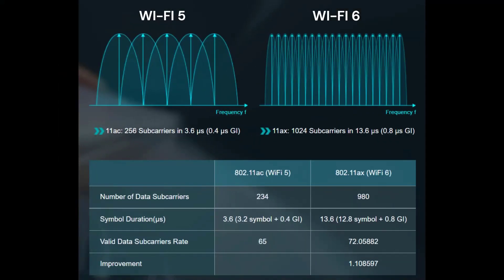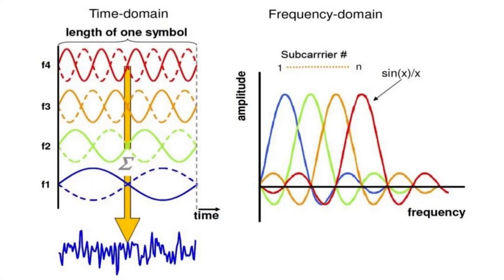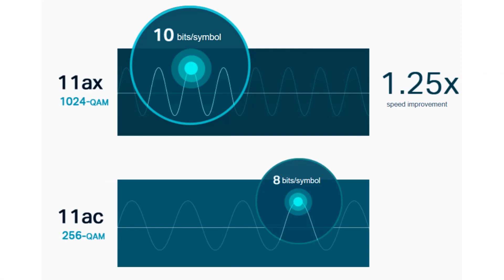Thirdly, Wi-Fi 6 offers more speed and greater stability. This is because of its 4 times longer OFDM that divides data among smaller sub-carriers for more stability and wider coverage. This enables Wi-Fi 6 to pack more data since it uses 10-bit symbol carriers rather than 8 bits.